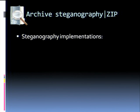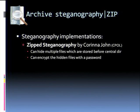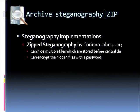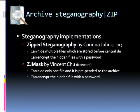We didn't really invent this and didn't want to create new problems. There are some implementations on the internet. There is Zip Steganography by Karina John, published under a C-Poll license — it can hide multiple files inside a zip archive stored just before the central directory, and can also encrypt files with a password. There's also ZJ Mask by Winston Chu, a freeware tool that can only hide one file inside either a zip or JPEG file by prepending the file to the archive. It damages the file in the process, but it can be decompressed generically by tools such as WinRAR.